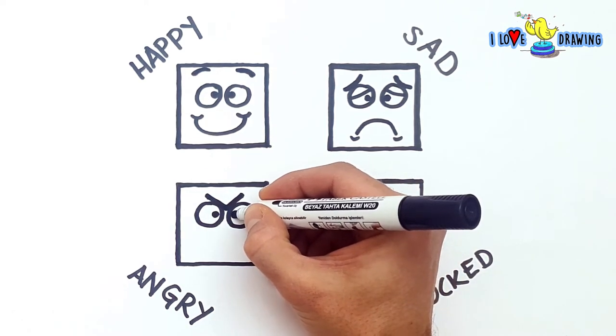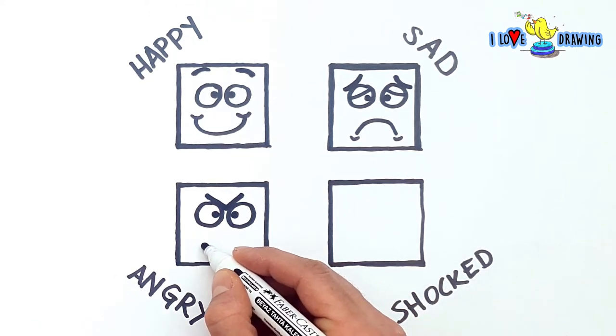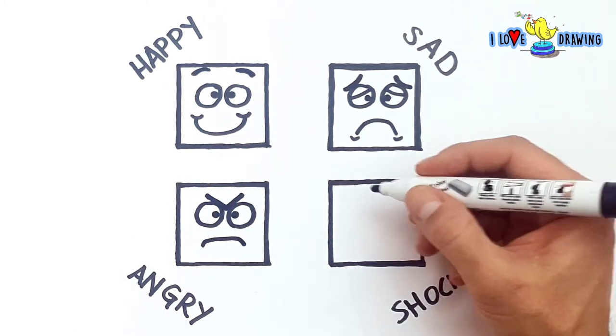The mouth will look very similar with the sad face. We just draw a curve and the corners of the mouth will be going down. And we come to our last expression, shocked square.